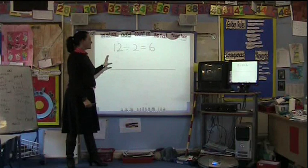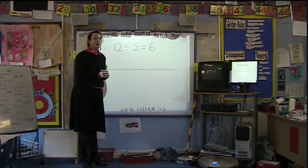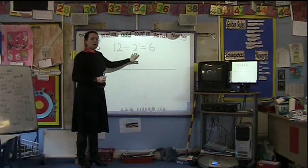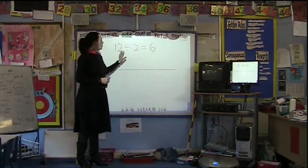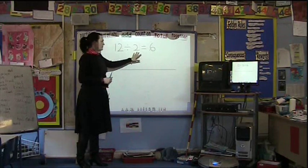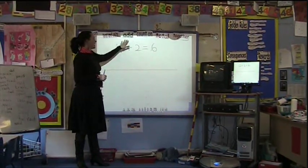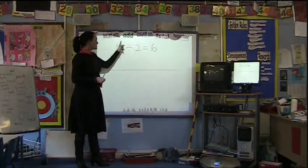Another way of looking at division is by encouraging the children to use what they know about multiplication. So if we know that 12 divided by 2 means 12 into groups of 2, or into groups of 6 giving you the answer of 2, we could actually say how many twos are there in 12.